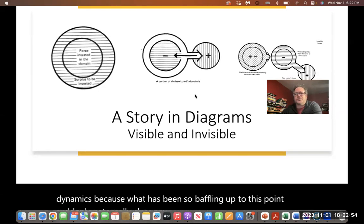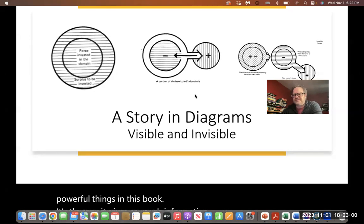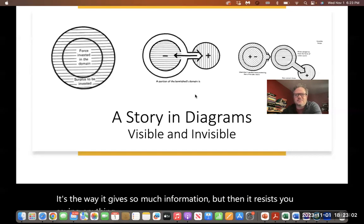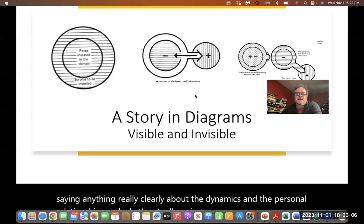I argued before that one of the powerful things in this book is the way it gives so much information, but then it resists you saying anything really clearly about the dynamics and the personal relationships and what's actually going on. In these diagrams, things get pretty clear.